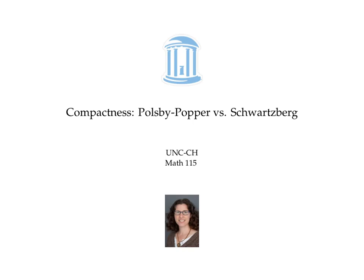In this video, we'll uncover a relationship between two measures of compactness of regions: the Polsby-Popper method and the Schwartzberg method. Recall that the Polsby-Popper method is calculated by taking the area of the region and dividing that by the area of the circle with the same perimeter as the region.